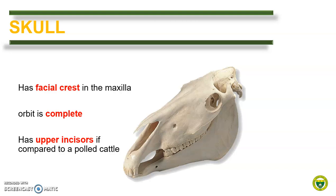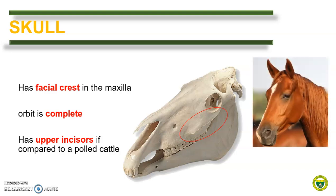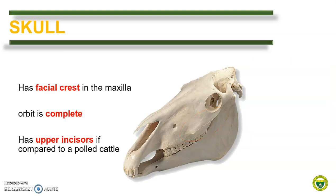Now let's move to the horse. This is a skull of a horse. At first, this can be mistaken with a polled cattle or a cattle without a horn. The first distinguishing feature is the presence of the facial crest. At the maxilla, you can see a crest extending from the zygomatic bone to the maxilla. This facial crest is palpable and can be seen at the facial part of the equine head. In contrast with the dog, the orbit of the horse is complete — this complete orbit is present in all large animals like horse and cattle. The horse also has upper incisors in contrast to large ruminants that lack such structure.